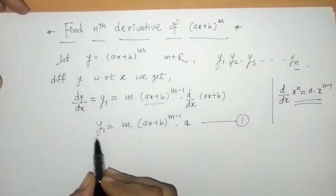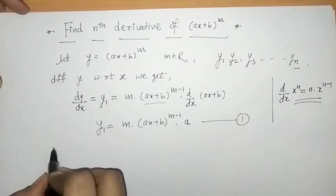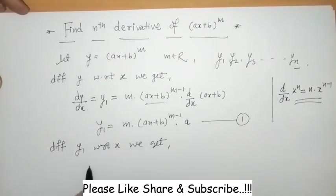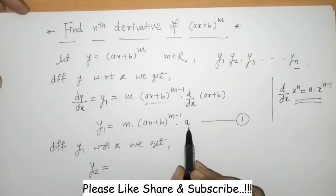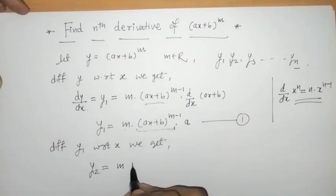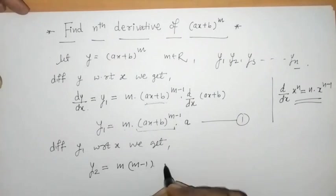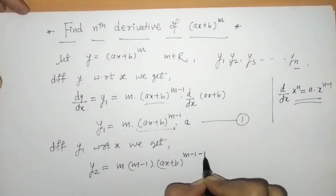Next, we differentiate y1 to get y2. The second derivative y2: here m and a are constants, so they remain as is. We apply the power rule to get (m − 1) into (ax + b) raised to (m − 1 − 1).